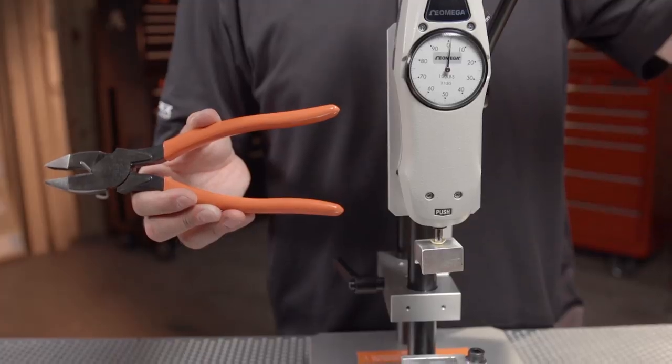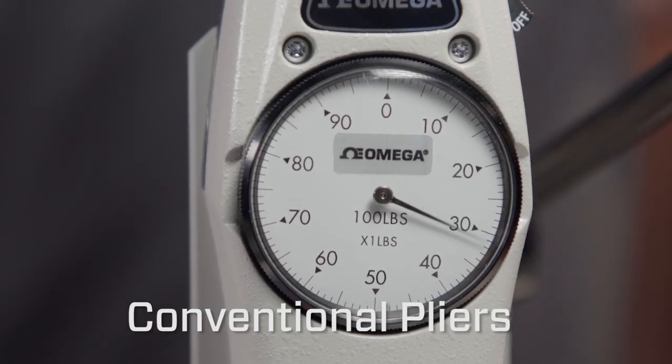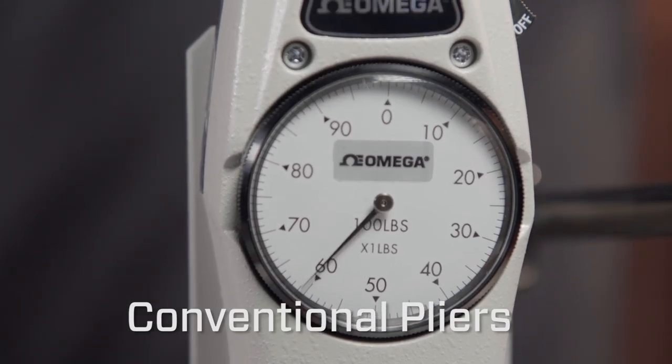For example, to cut hard steel wire, conventional pliers need an average of 60 pounds of pressure at the handles.